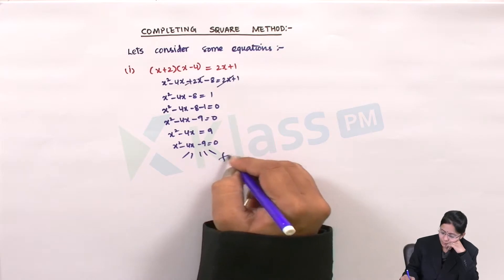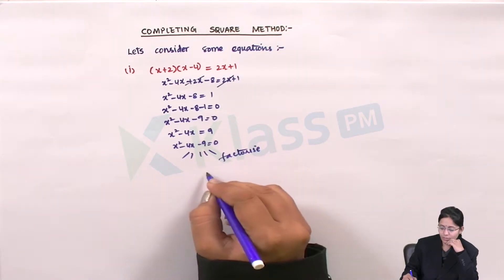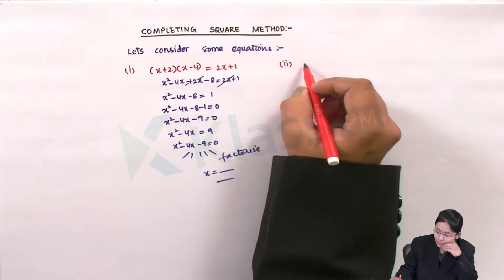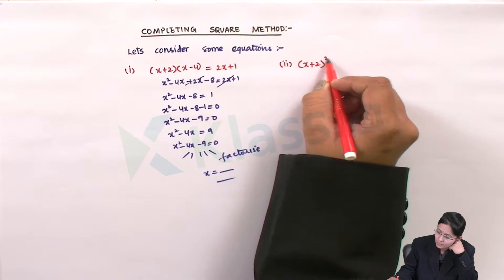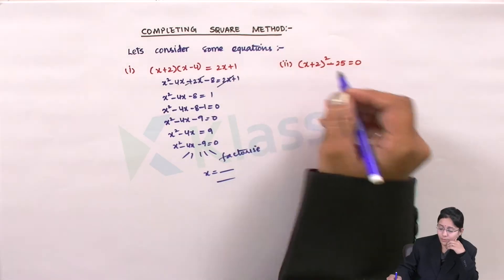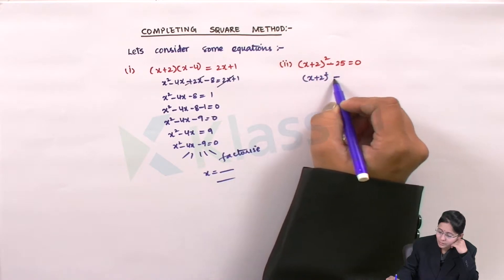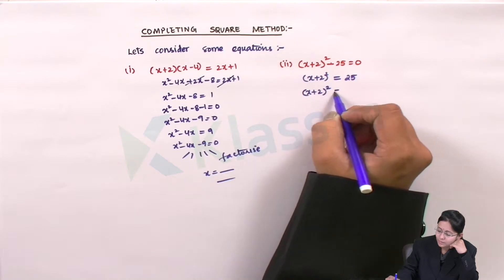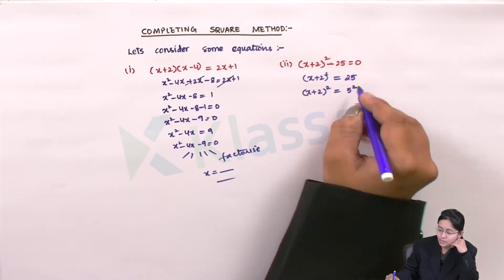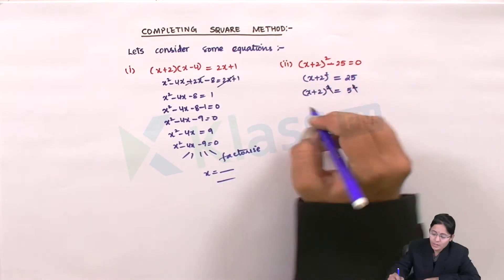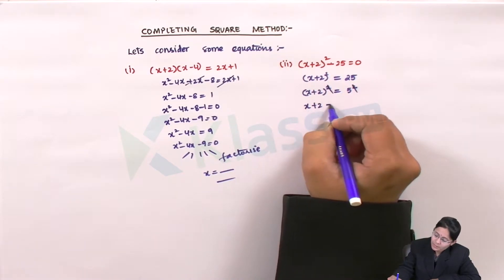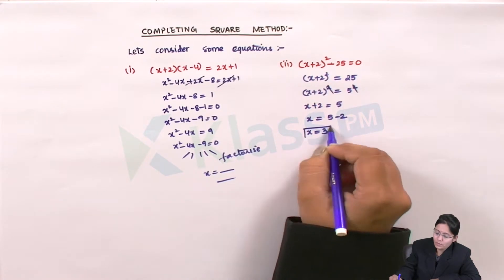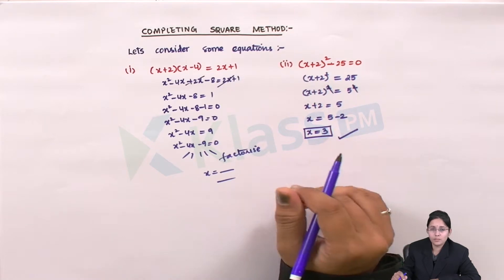We further try to factorize it and find the x values. Next, if I take the second example: (x + 2)² − 25 = 0. I can send 25 to the other side to get (x + 2)² = 25. Since 25 is a perfect square — that is 5² — I cancel the squares and get x + 2 = 5, so x = 5 − 2 = 3. This is the root we obtained.